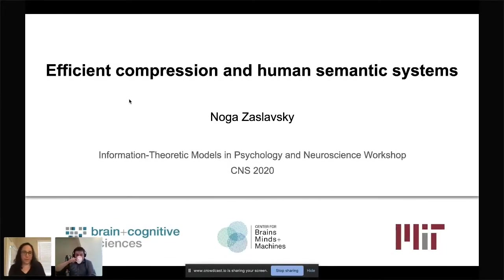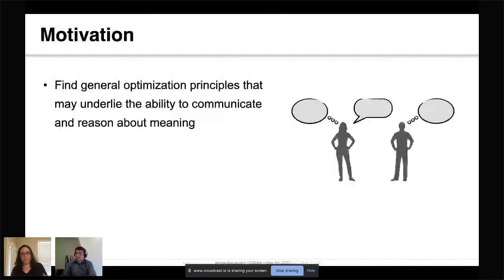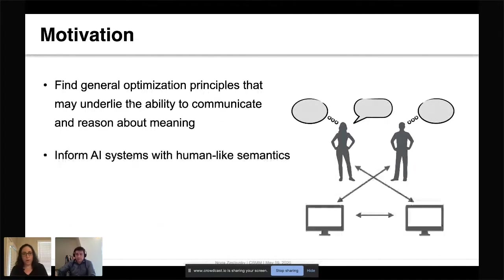Today I will talk about efficient compression and human semantic systems. The broad question I would like to touch on is what computational principles may explain human semantic systems. By semantic systems, I mean a mapping or the different ways languages assign meanings to words. The motivation in this work is to understand semantic systems in terms of general optimization principles — to better understand human languages, but also from a machine learning perspective, since such principles could help make progress towards AI systems with human-like semantics.